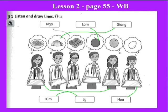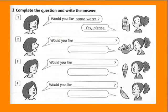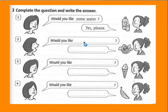Now we turn to exercise two. Complete the question and write the answer. In this exercise, complete the 'Would you like?' question and look at the person's face to know if they answer yes or no. Look at the food item to complete the question. Pay attention to singular and plural to use 'some', 'a', or 'an' correctly.